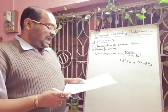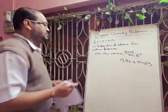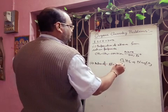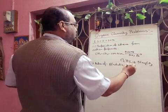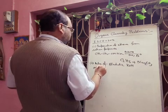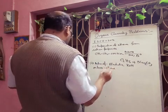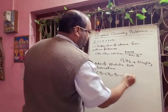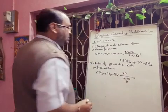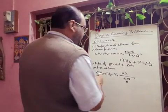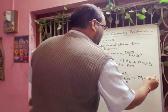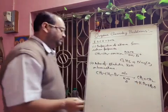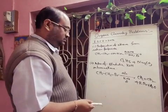Next one: action of alcoholic KOH on bromoethane. CH3CH2Br with alcoholic KOH and heat — definitely there will be elimination of H, and you will get CH2=CH2 (ethene), and there will be formation of KBr plus H2O. I think this equation is balanced.